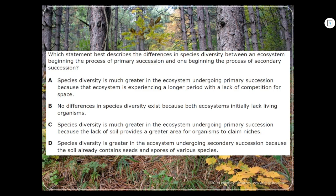Here's a practice question: Which statement best describes the differences in species diversity between an ecosystem beginning primary succession and one beginning secondary succession? Remember, when they first start, there are just a few basic plants — very small, not very tall, not very deep roots, not very many types. As more time passes, the soil gets deeper, the roots get deeper, and there's more variety — more biodiversity of different types of plants.